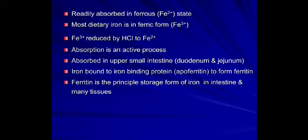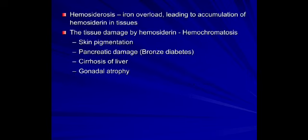Iron absorption is by active process, predominantly in the duodenum and jejunum. Iron binds to the iron-binding protein apoferritin to form ferritin, which is the principal storage form of iron in the intestine and many tissues. When iron is in excess, iron overload leads to accumulation of hemosiderin in tissues — hemosiderosis. Tissue damage from hemosiderin results in hemochromatosis, presenting with skin pigmentation, pancreatic damage causing bronze diabetes, cirrhosis of the liver, and gonadal atrophy.